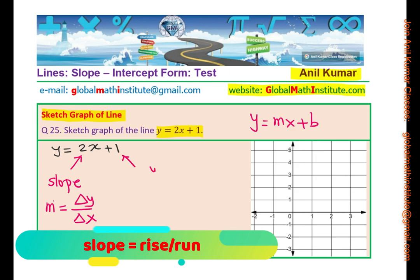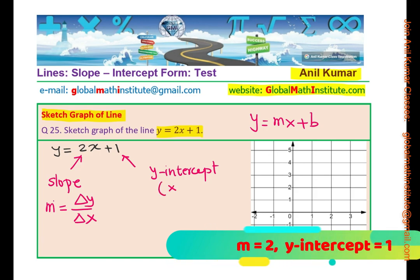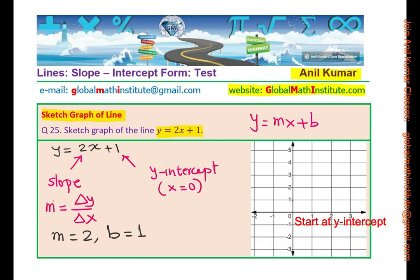And this one is the y-intercept. Y-intercept is the value when x is 0. So at this point, x is equal to 0. We will sketch from the given information. We know that m is equal to 2 and the y-intercept b is equal to 1. So let us begin with y-intercept, which is 1. So that is the first point to be marked.